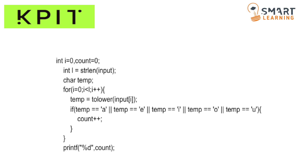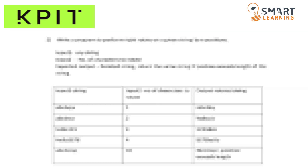After converting the string to lowercase, for every iteration I am checking whether the character is a vowel or not. The vowels are a, e, i, o, u. If the particular character is a vowel, I am incrementing the count so that we can get the total vowel count in the input string. This is the code for vowel count.